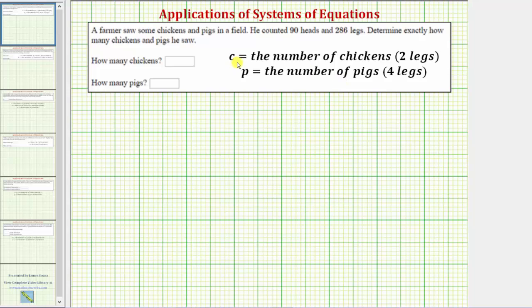Next we know each chicken has one head and two legs. Each pig has one head and four legs. So because he counted 90 heads, we know c plus p must equal 90.